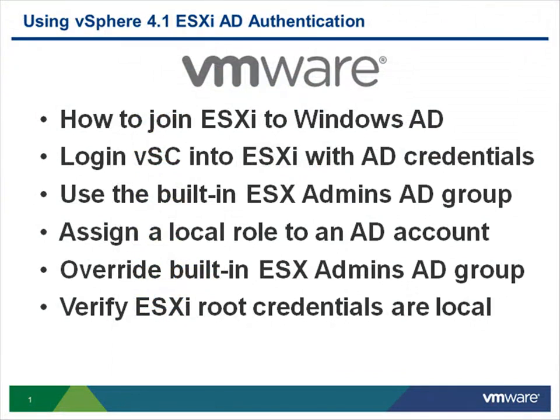I just showed you how to join a standalone ESXi server to the Windows Active Directory as a member server, and then that gave it the ability to access the Active Directory. We went to our Active Directory domain controller, created a new Active Directory group called ESX admins, and added an existing Windows account to that security group. We proved that this worked by logging directly into the ESXi server using Windows Active Directory credentials. So now let's move on to how to assign a local role to an Active Directory account.